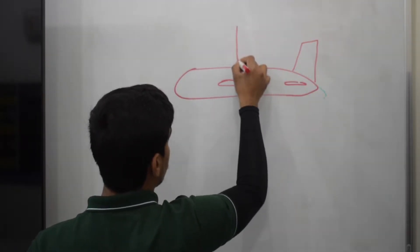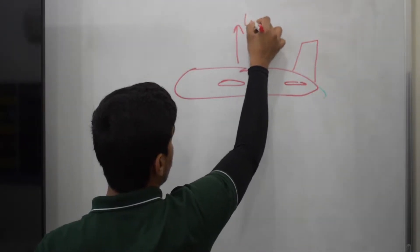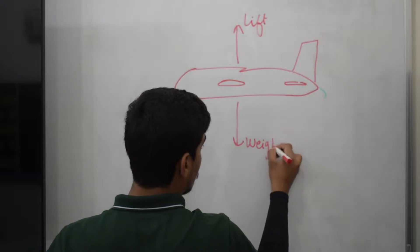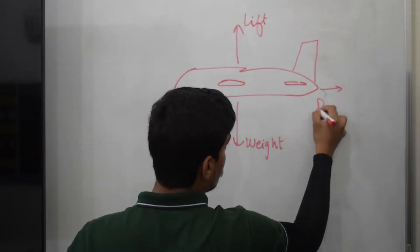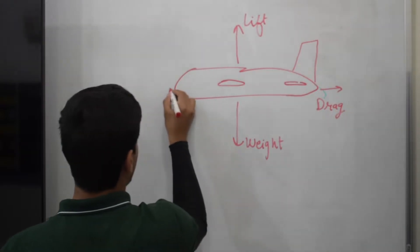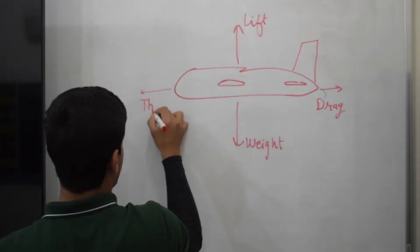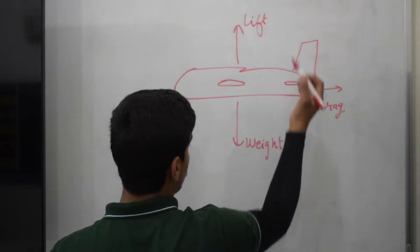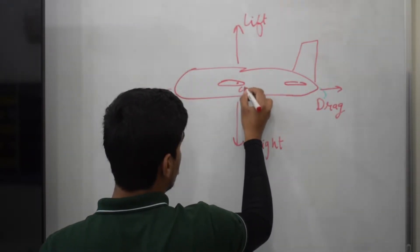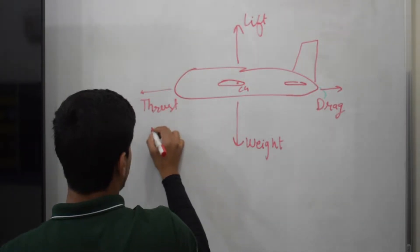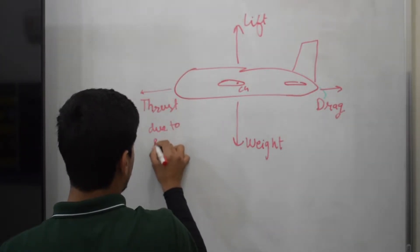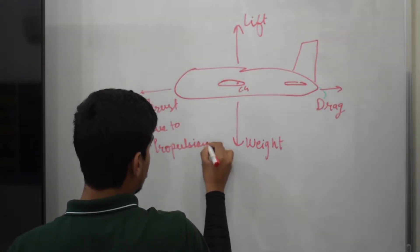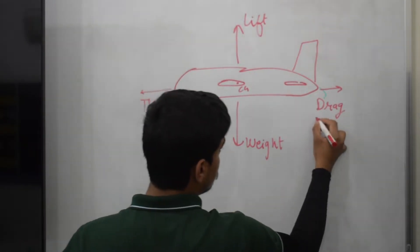Let's start with the basic four forces that act on a drone. We shall understand these fundamental forces in the context of a fixed-wing UAV, seen here in a side view. The four basic forces are: lift, which acts upwards; weight, which acts downward; thrust, which acts forwards; and drag, which acts against the direction of motion. Lift makes the aircraft rise, weight is the force of the aircraft's mass towards the earth, thrust is a propelling force through a turbofan or propeller engine, and drag is the force exerted on the aircraft by air.